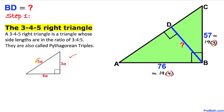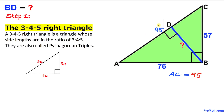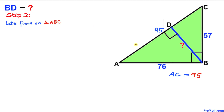The hypotenuse is going to be 19 times 5, which equals 95. So our side length AC turns out to be 95.